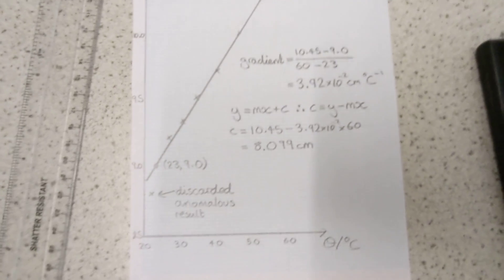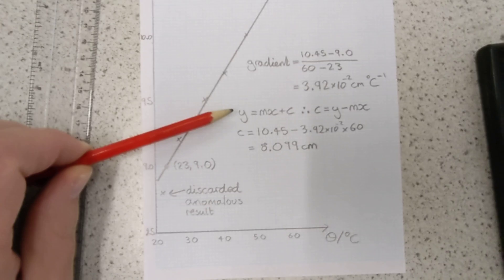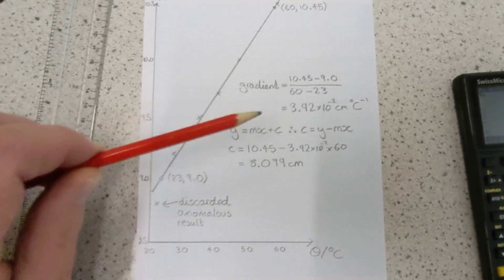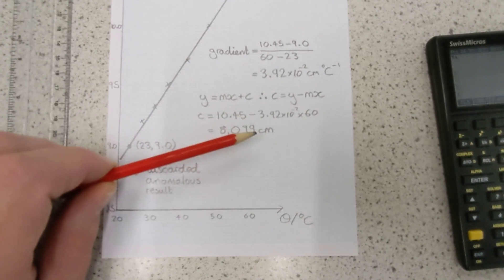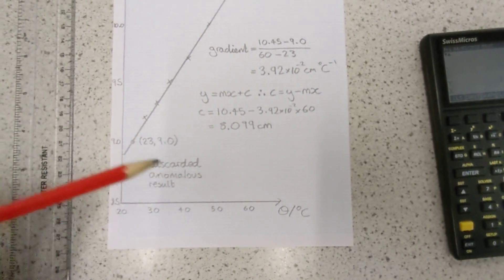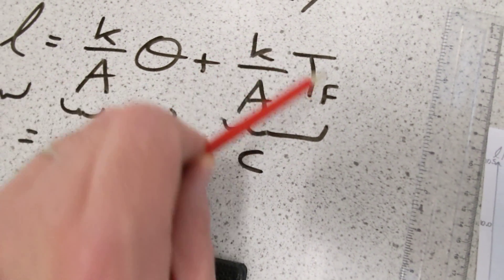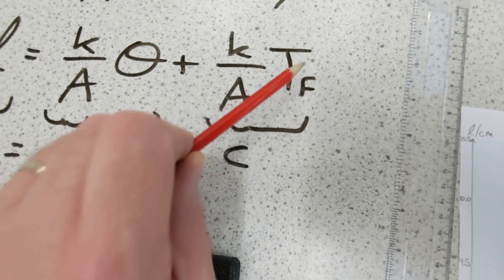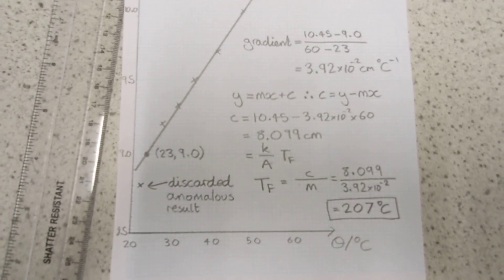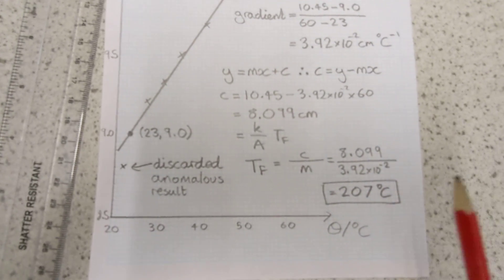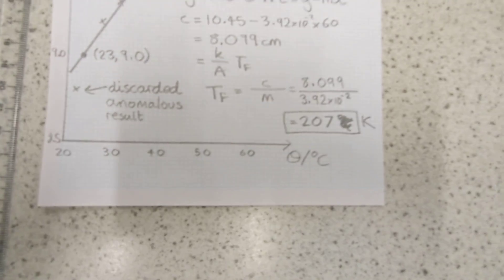Now I can use y = mx + c and this gradient, along with a point on this graph, to determine what the y-intercept is. Write down all of your steps: y = mx + c so the examiner knows you're using a straight line, rearranged to get c as the subject, substitute the numbers, and give the intercept with its units. The final stage is to compute T_f — the Kelvin temperature equivalent to zero degrees Celsius. When I did my calculation with my results, I got... I made a mistake there. The answer is 207 Kelvin.